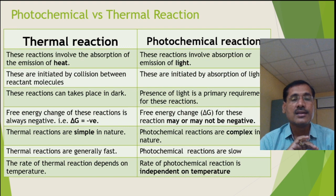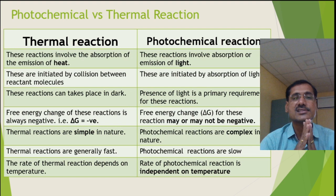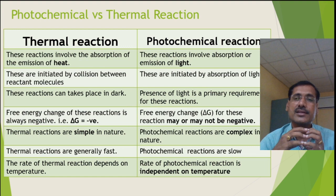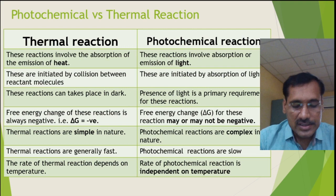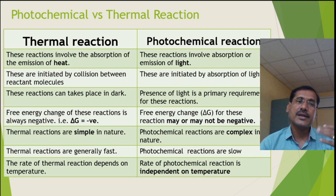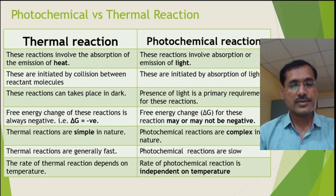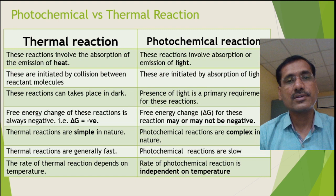Thermal reactions are usually fast whereas photochemical reactions are generally slow. The rate of a thermal reaction depends on temperature — increasing the reaction temperature by 10 degrees approximately doubles the reaction rate — whereas the rate of a photochemical reaction is independent of temperature, and this rule does not apply. With these points, today's lecture concludes. In the next video, we will cover the laws of photochemistry. Thank you for your attention.